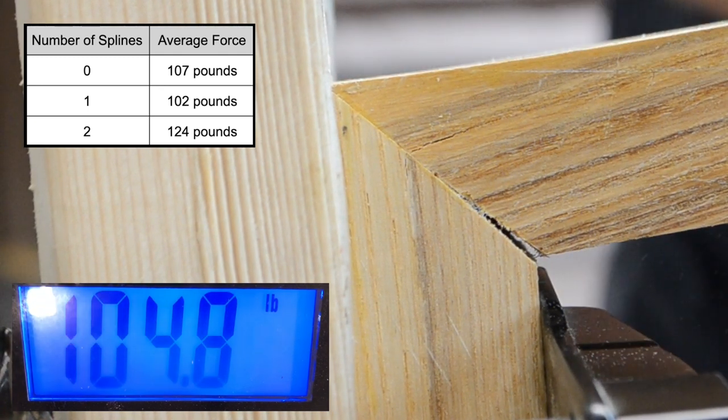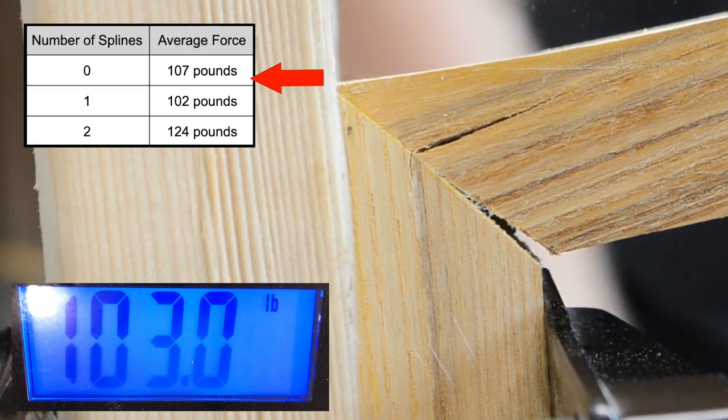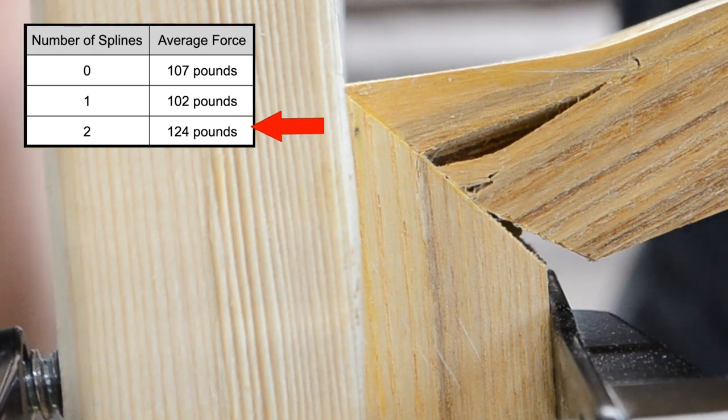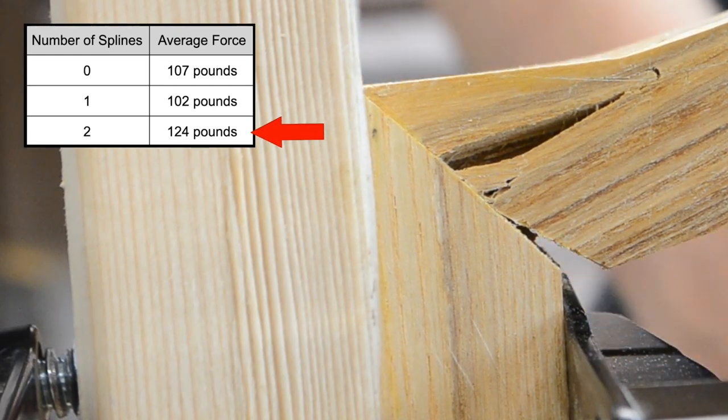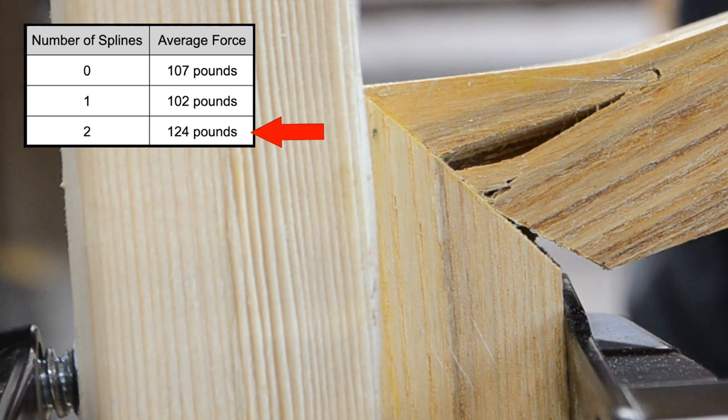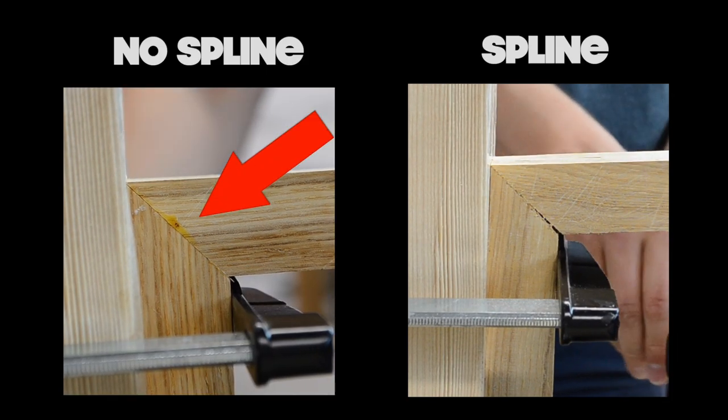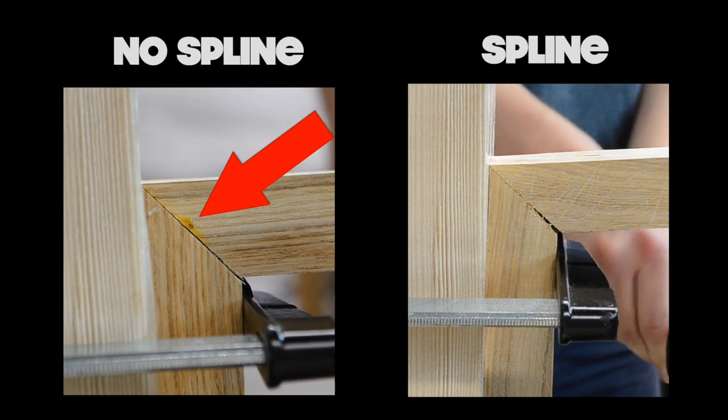So at first glance, it looks like adding one spline will actually decrease the strength of a miter joint, but adding two would slightly increase it. Could this really be true? Here's what I think is happening. I noticed that when breaking the joints with no splines, when they failed they completely popped apart cleanly.